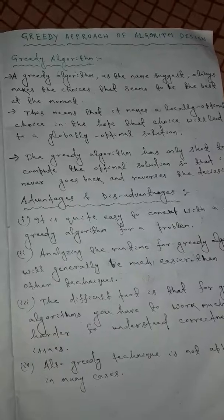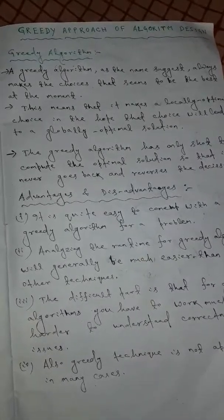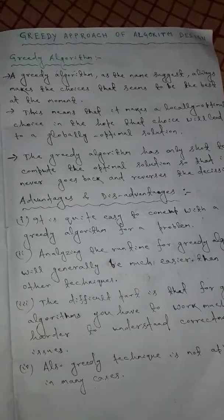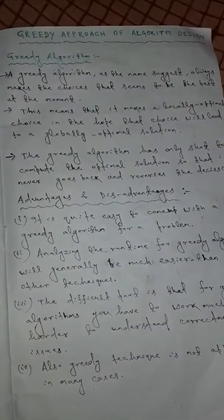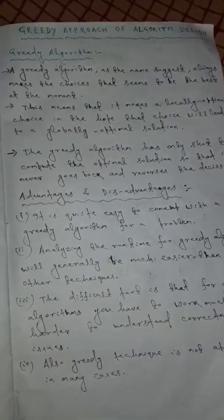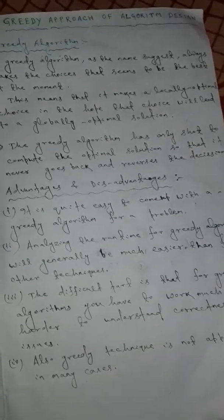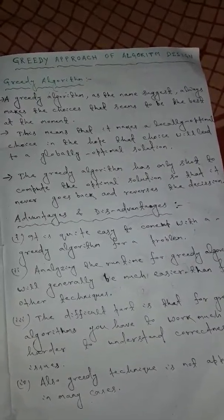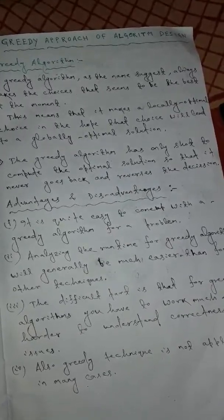Greedy method or greedy algorithm - as its name suggests, it makes the best choice in the perfect moment. This means that it makes a locally optimal choice in the hope that the choice will lead to a globally optimal solution.